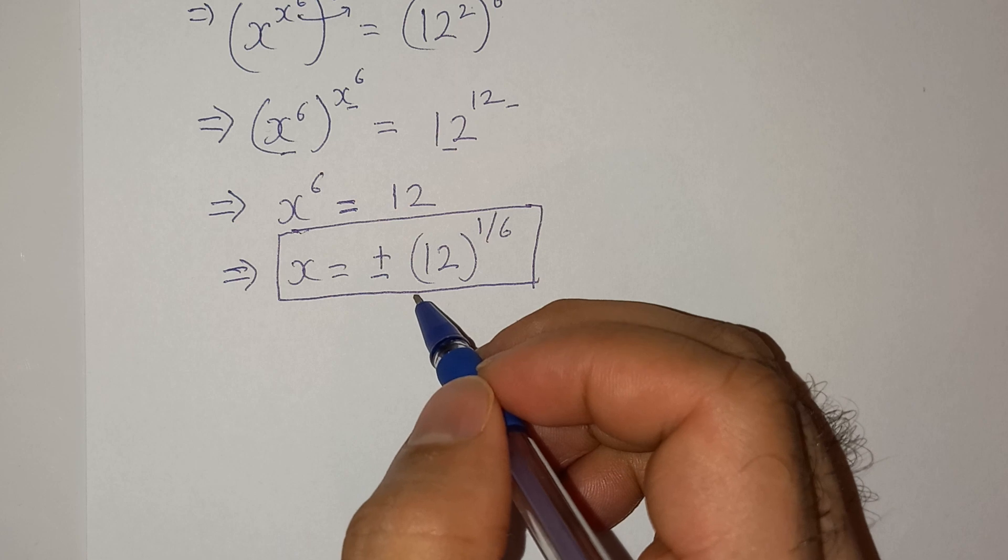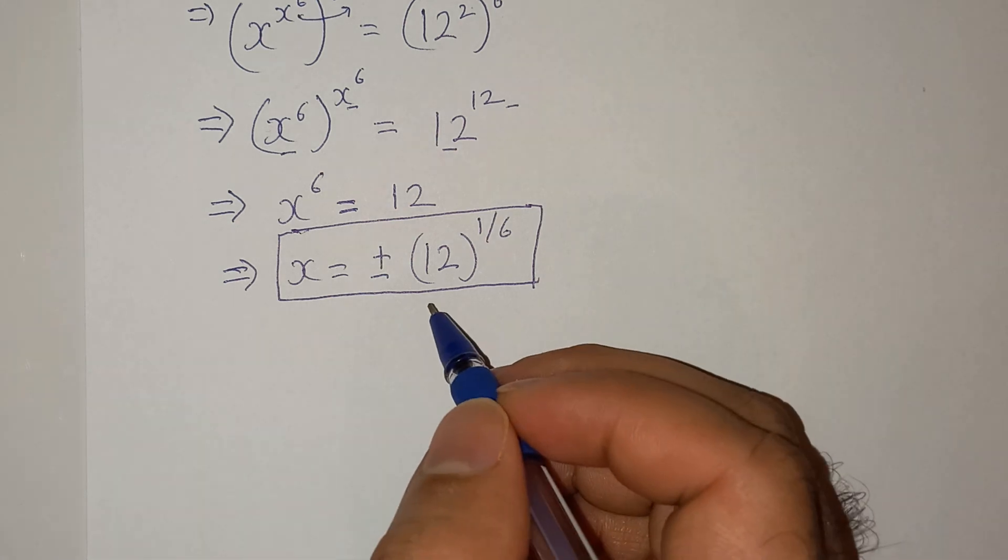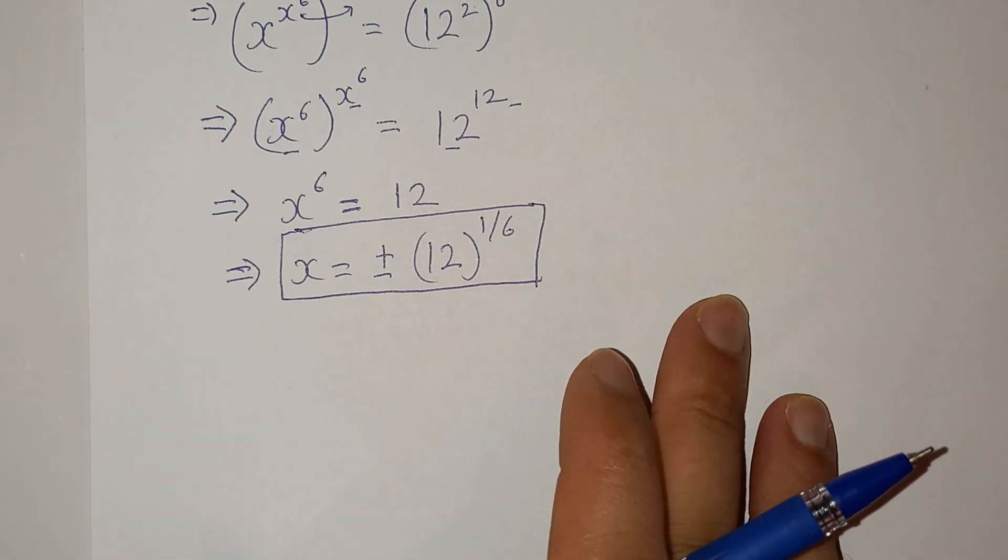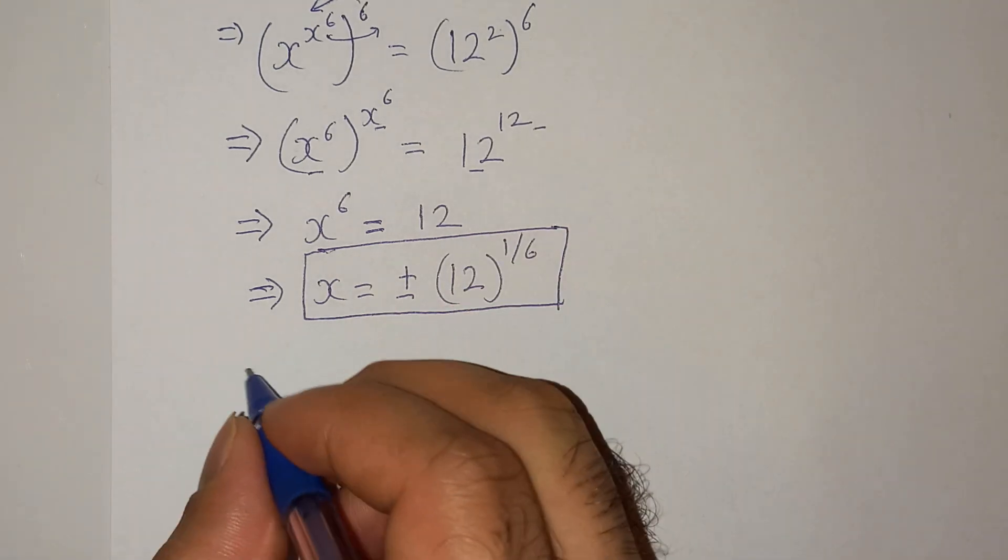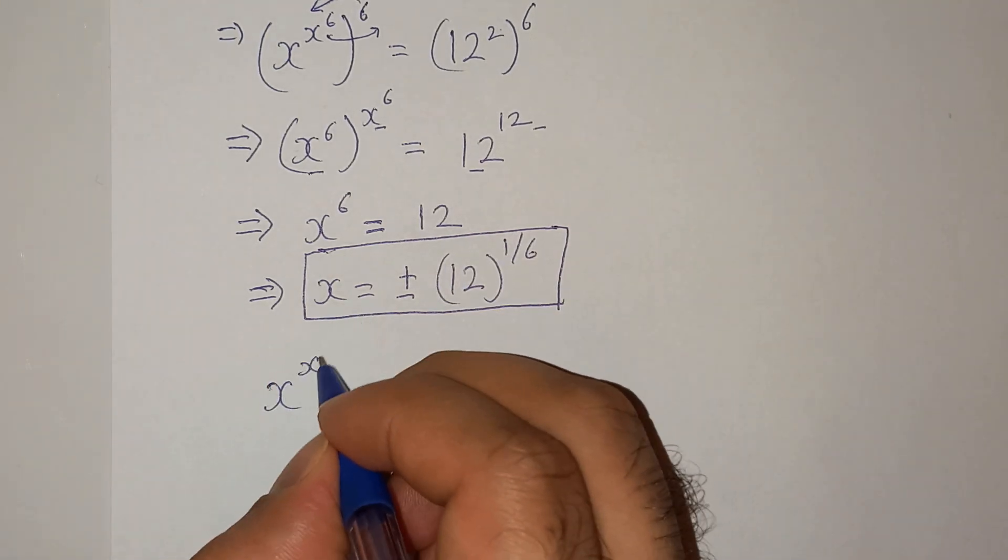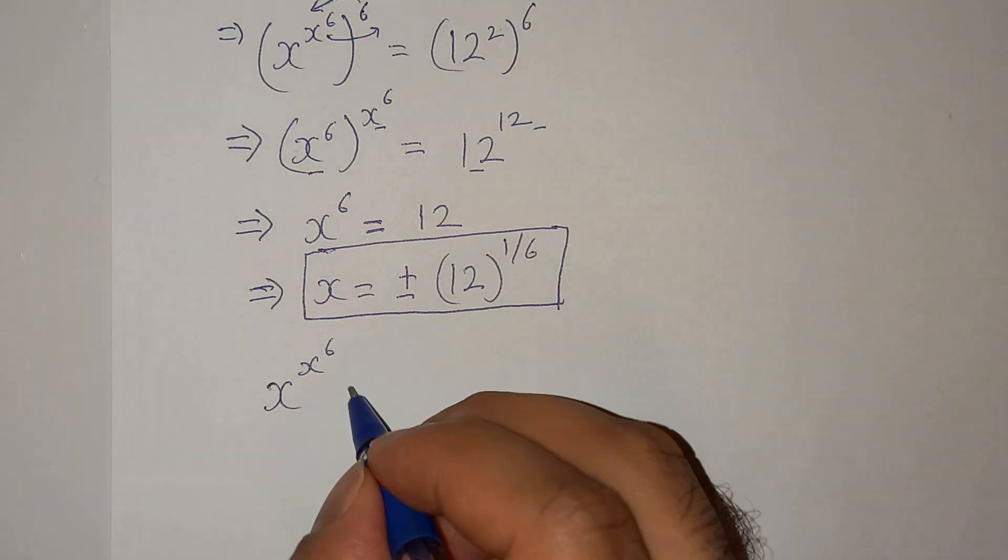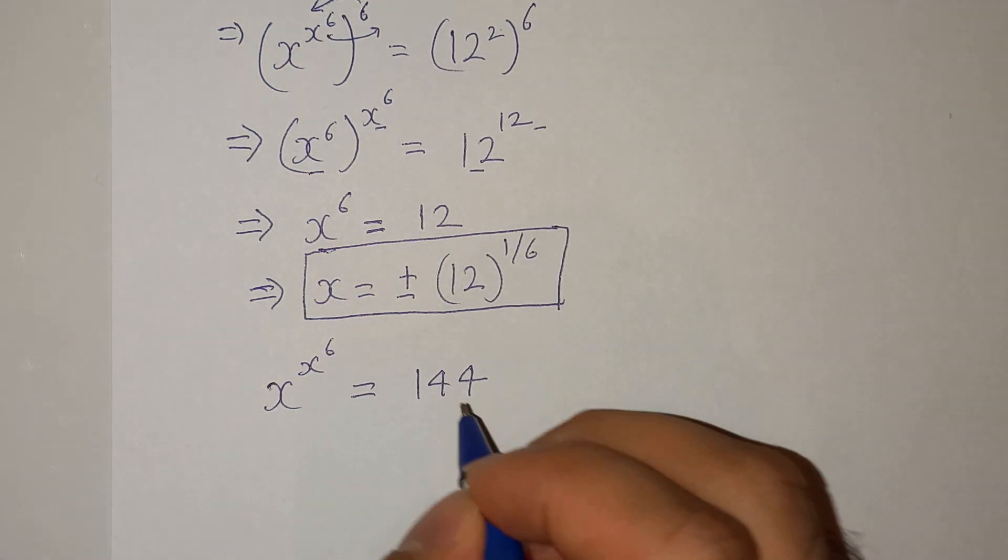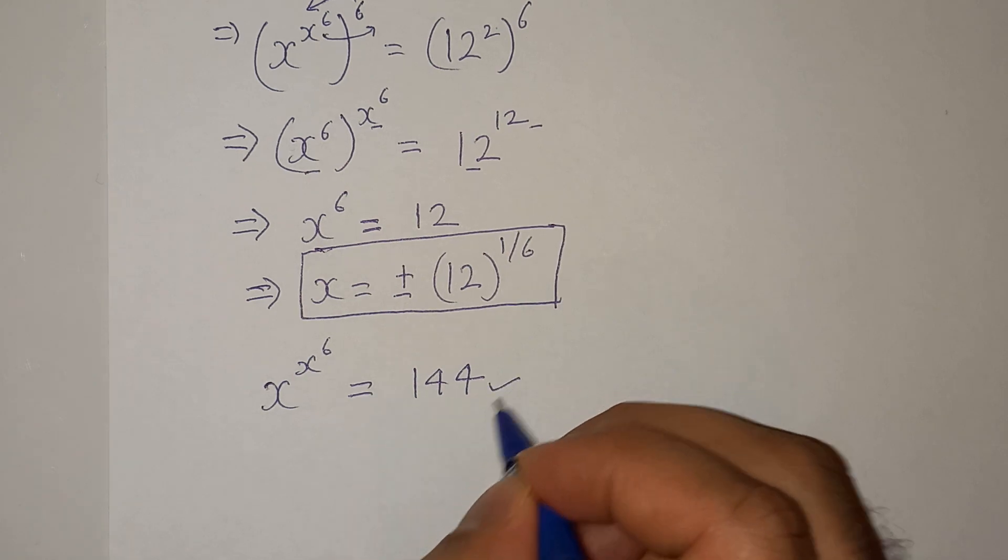Now let's see if our answer was actually right or not by putting this value in the original question. So the original question was x^(x^6) = 144. So it should come to be 144.